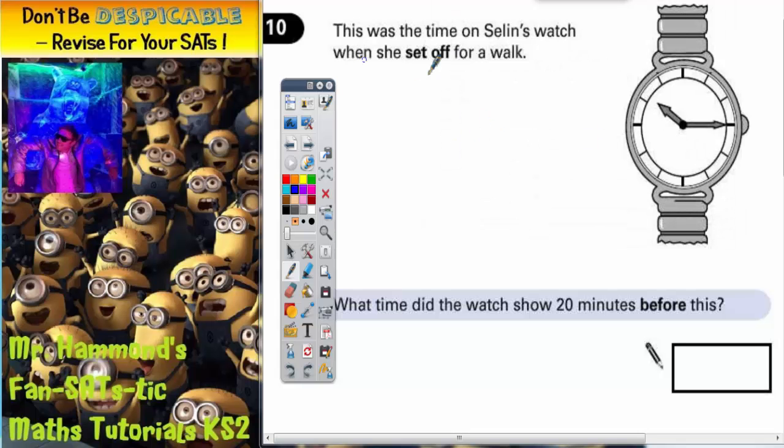Question 10. This was the time on Celine's watch when she set off for a walk. What time did the watch show 20 minutes before this?